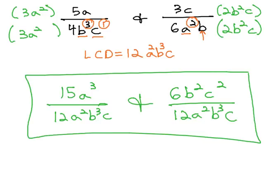We have now identified the LCD by taking all the factors with highest exponents, all unique factors I should say, and then finally built up each fraction to have that common denominator by multiplying by missing factors.